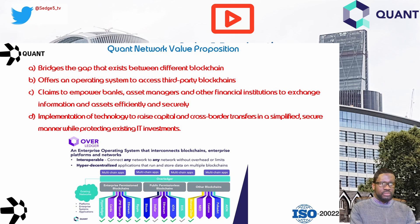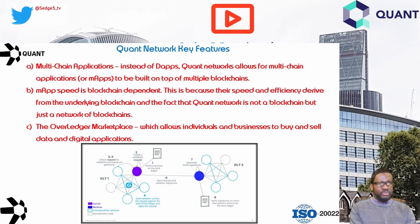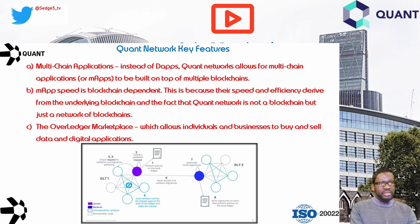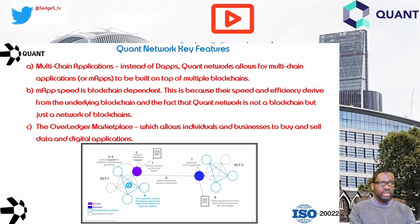Here are some of Quant Network's key features. The first is multi-chain applications. Instead of dApps, Quant Network allows MAPPs to be built on top of multiple blockchains. While regular dApps are built on a single blockchain, MAPPs are made up of 3T contracts — programs which allow multiple smart contracts on different blockchains to work in unison. Multi-chain application speed is blockchain dependent, since Quant Network is not a blockchain but a network of blockchains. For example, a MAPP on BNB should scale faster than one on Ethereum, because Ethereum is slower than the BNB chain. The Overledger marketplace also allows individuals and businesses to build and sell data and digital applications.